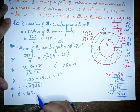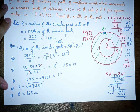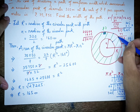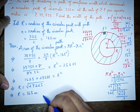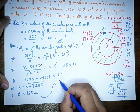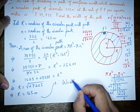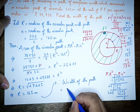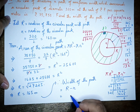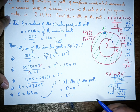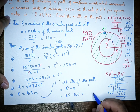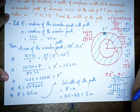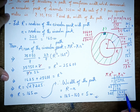So R = 165 meters. The width of the path = R − r = 165 − 160 = 5 meters. The radius of the inner park is 160 m and the outer radius is 165 m, so the width of the path is 5 meters.